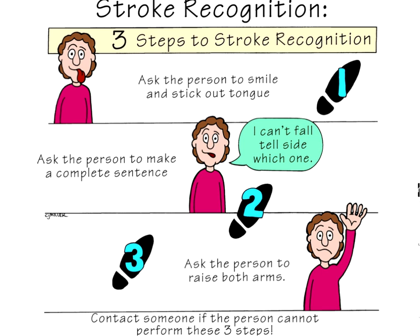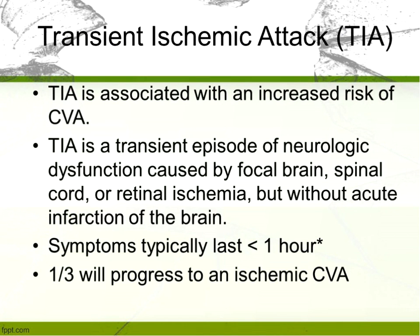This slide is a visual about three steps to stroke recognition. We still need to do public education — people delay treatment, and time loss equals brain loss. Something not covered in the three steps of recognition are changes in vision and changes in cognition, but those are also signs of a stroke that we would want to respond to.